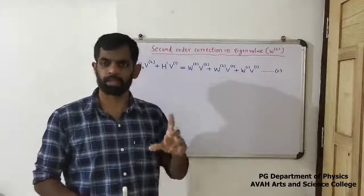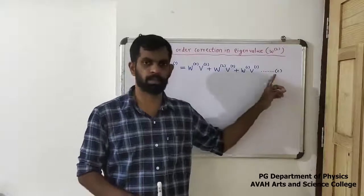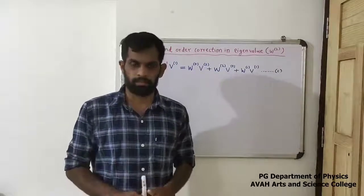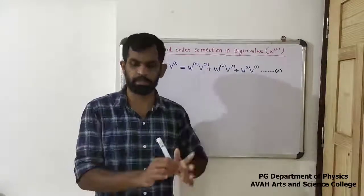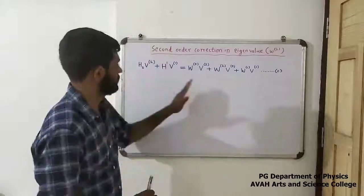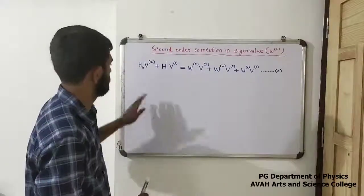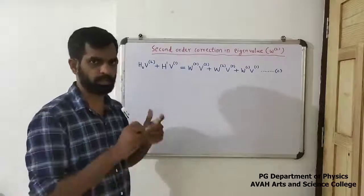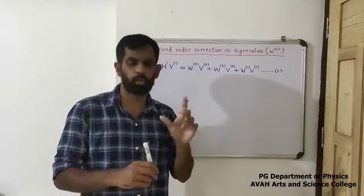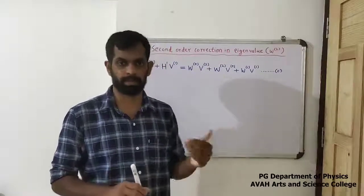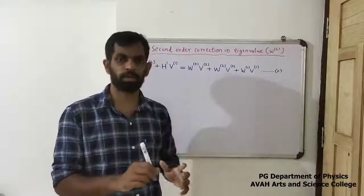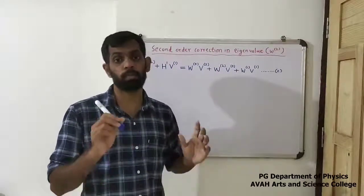We chose to calculate the coefficient C. The equation is starting with lambda squared — we chose a coefficient from the second order of the equation. Now we can substitute the set. We know the set u, u1, u2, m, un, and we can write it. That set is a complete orthonormal set.